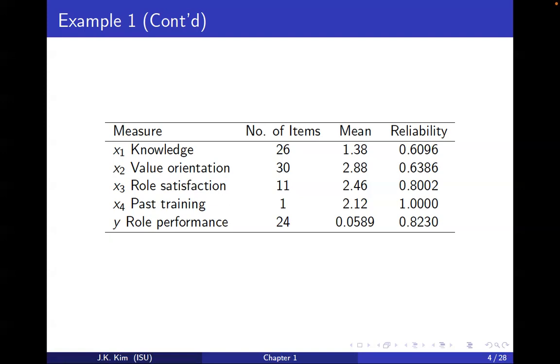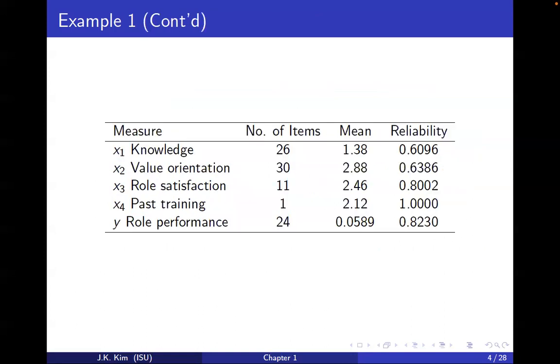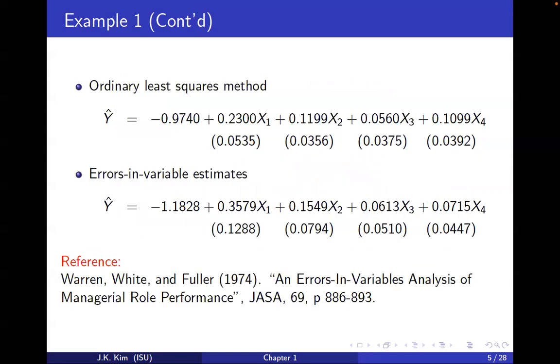You will construct x1, x2, x3, x4, and y. We have 98 observations, so we have a single number for each. The point is that this number has measurement error, which is reflected in the reliability. The point of this paper is that you need to take into account the uncertainty in the measurement of x variables in order to make correct inference.